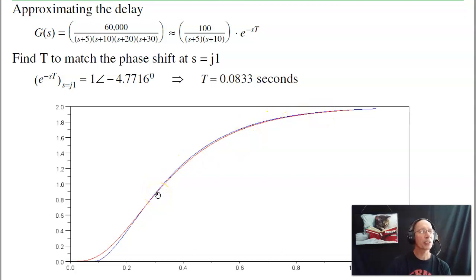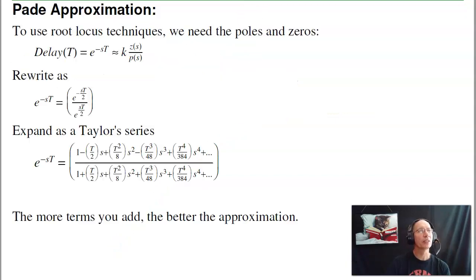When I design a feedback system around that model, I'll more accurately predict how the closed loop system will behave. The goal is an accurate model that's simple, and delays are one way to account for all the dynamics that you've ignored.